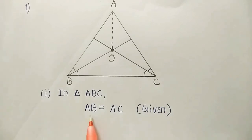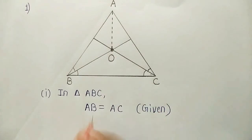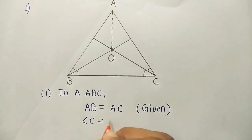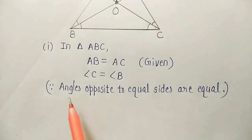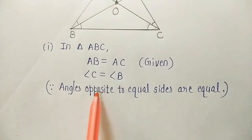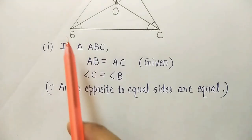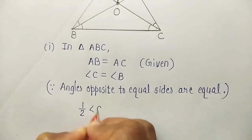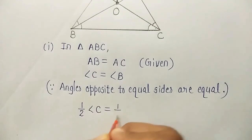The angle opposite to side AB is angle C, and the angle opposite to side AC is angle B. So angle B and angle C will be equal, because angles opposite to equal sides are equal. Now we will consider half of these angles, because it is given that the bisectors of angle B and angle C are drawn. Bisector means half, so half of angle C is equal to half of angle B.